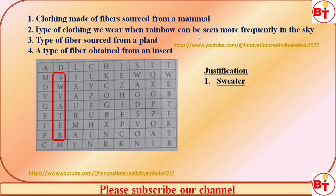Question two: the type of clothing we wear when a rainbow can be seen more frequently in the sky. We have to find the type of clothing we wear when rainbow is seen, which means the question is talking about the rainy season. In the rainy season, we wear a raincoat. You can see the raincoat is available here in the grid.